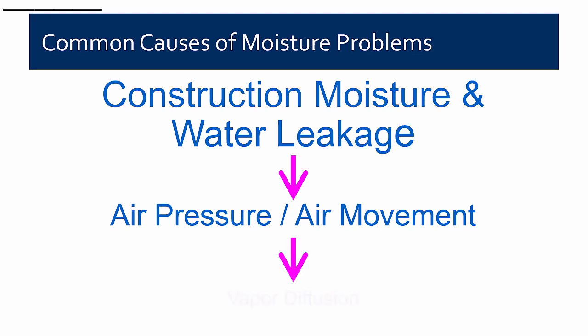We also have potential for problems with vapor diffusion, but in my experience those are really only seen on cold storage facilities and similarly severe cases. Generally, when we talk about vapor barrier versus vapor retarder, in most cases the critical element is not whether it's a vapor barrier or vapor retarder — it's whether it's acting as an air barrier or air retarder.